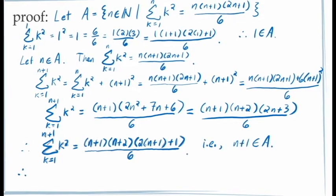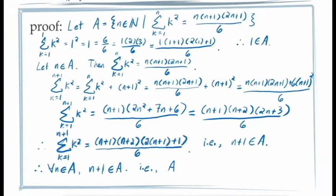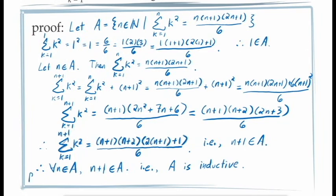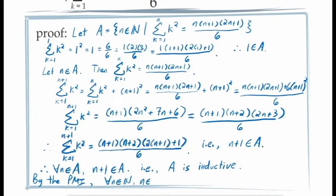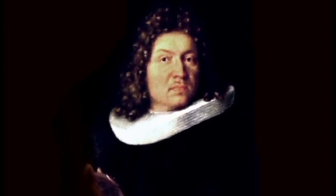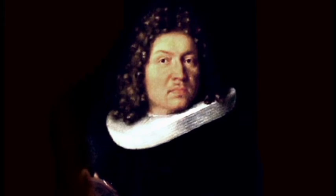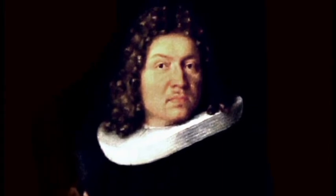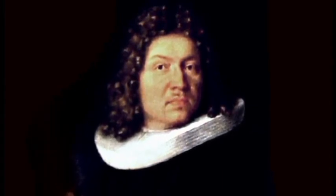We've now shown that for an arbitrary value of n in the set A, n plus 1 is also in the set A, so from the principle of mathematical induction we know A is an inductive set which means A contains all of the natural numbers. The Swiss mathematician Jacob Bernoulli discovered in the late 1600s a general formula for all sums of polynomial expressions, meaning closed-form formulas are known for any sequence of the form k to the exponent m. Proofs of Bernoulli's formulas for f of k equals k cubed and f of k equals k to the power 4 are left as exercises.